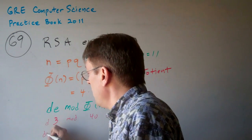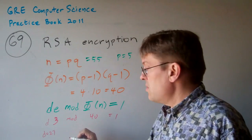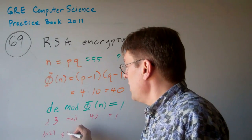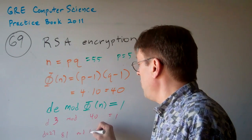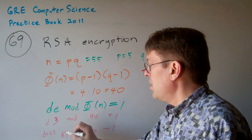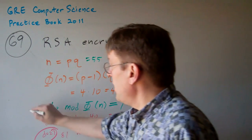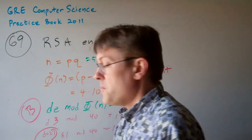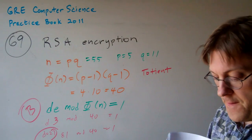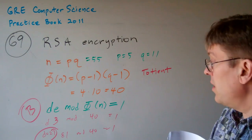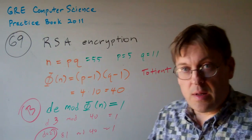D has got to equal 27, because 27 times 3 is 81, mod 40 is 1. So the answer D is 27. That's answer B. Hopefully that's clear.